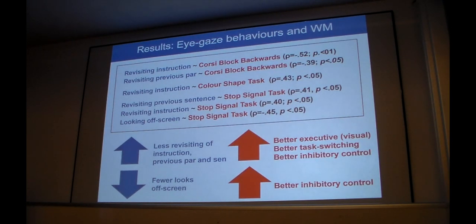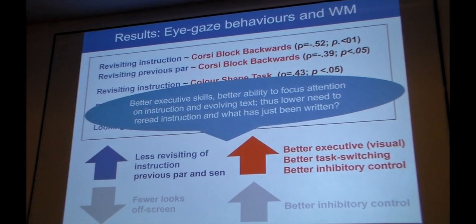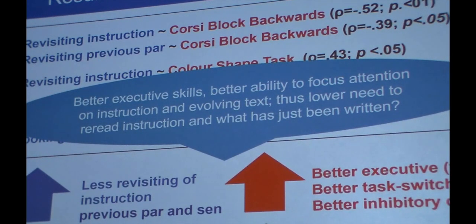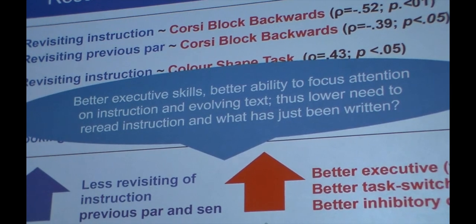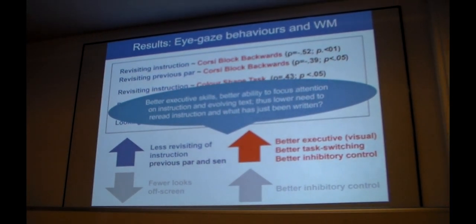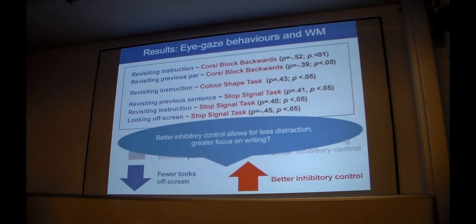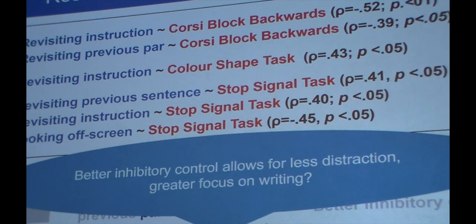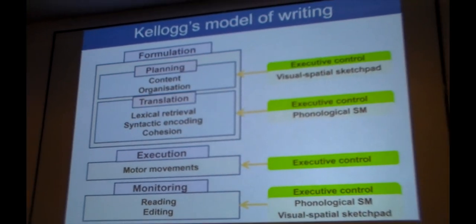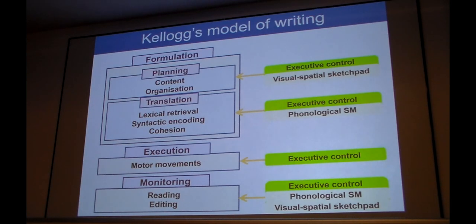And finally, how do working memory measures relate to the eye gaze measures? What we found is that when participants went back to the instruction less often or looked at the previous sentence or paragraph less often, they tended to have better executive control in terms of visual measures and also better task switching ability and better inhibitory control. Also, those participants who looked fewer times off-screen, they had better inhibitory control. Better executive skills, better ability to focus attention on the instruction and evolving text might have allowed participants to keep this information in memory. And maybe that's why they didn't have to go back so often to look at these parts of the text. The last one is quite obvious, right? If you are easily distracted, maybe in the lab you might be looking at the researcher, maybe the windows, and you're not focusing on the text. So there would be fewer looks off-screen if you have better inhibitory control.